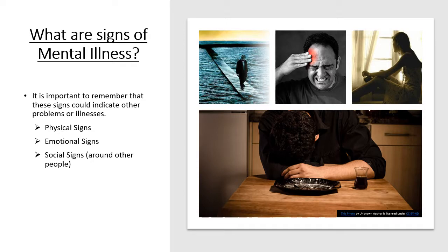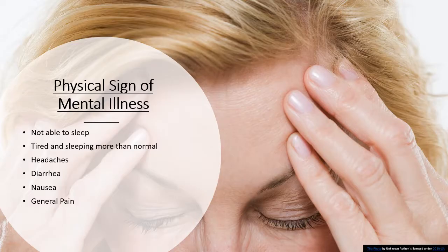What are the signs of mental illness? It is important to remember that these signs could indicate other problems or illnesses. There may be physical signs, emotional signs, and social signs, wherein the ability to be around other people is affected. The physical signs of mental illness include being unable to sleep, being tired and sleeping more than normal, headaches, diarrhea, nausea, and general pain.